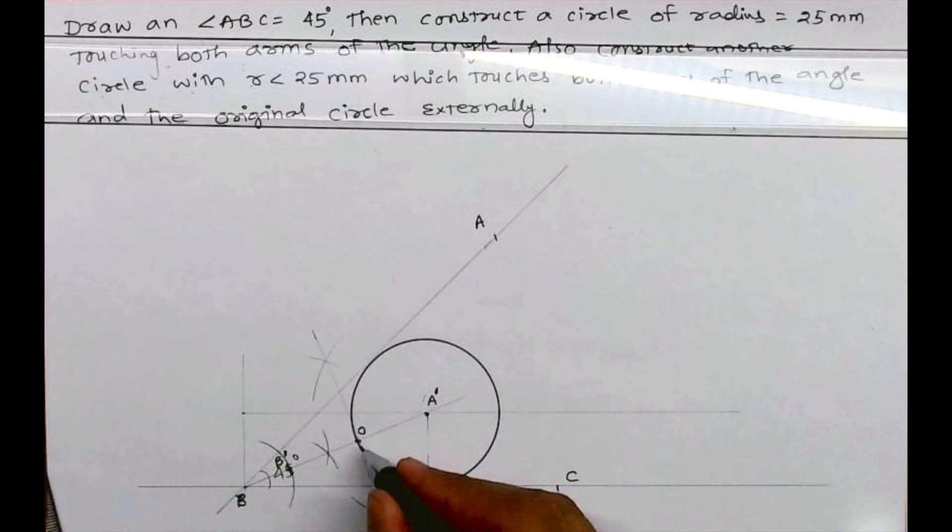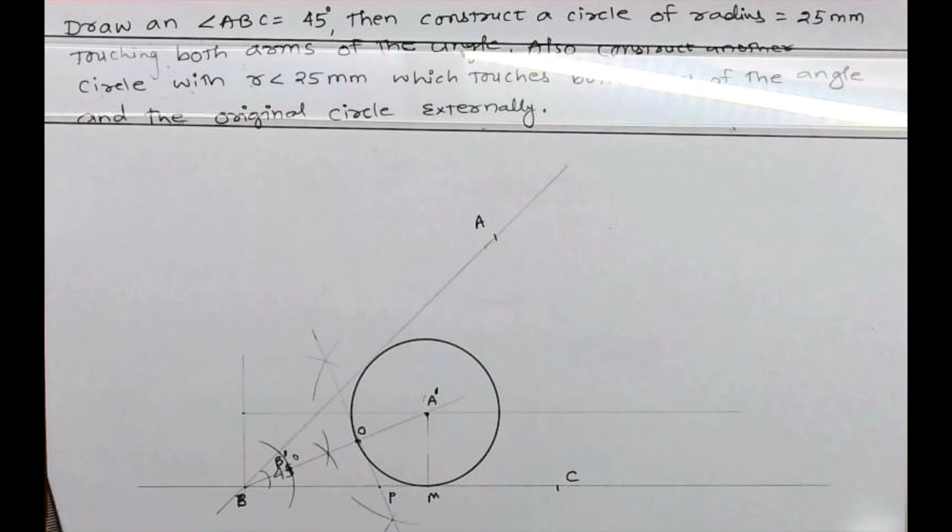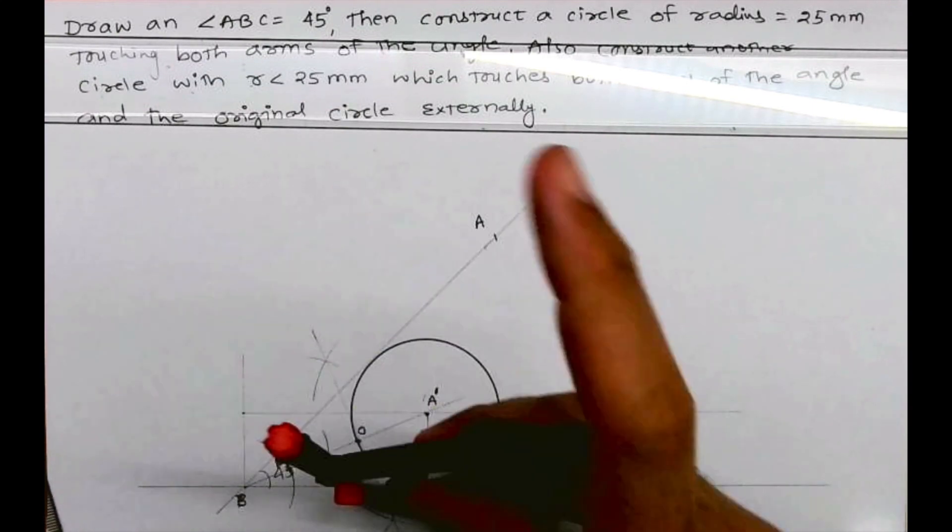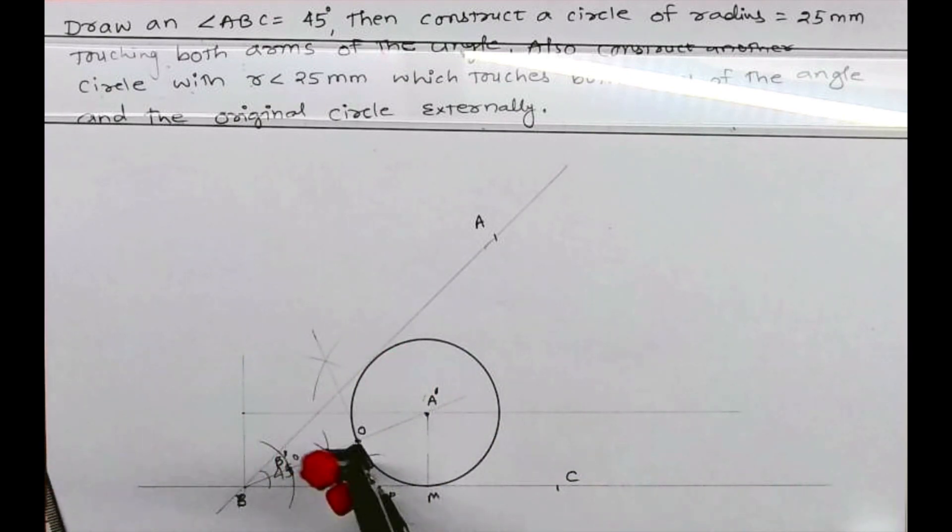Now bisect angle OPB. When you bisect, wherever it will intersect with that bisection of AB, that will be the point C', and from there we can draw a circle.